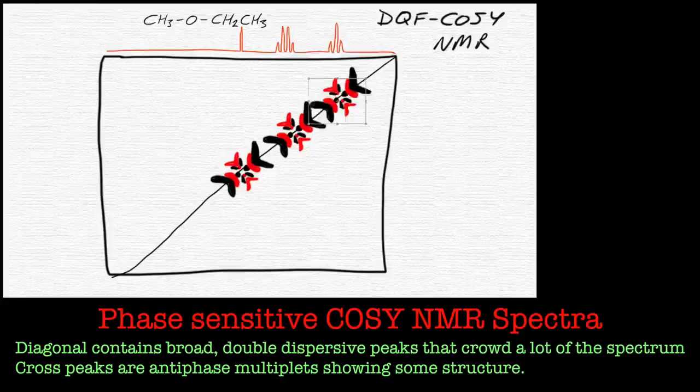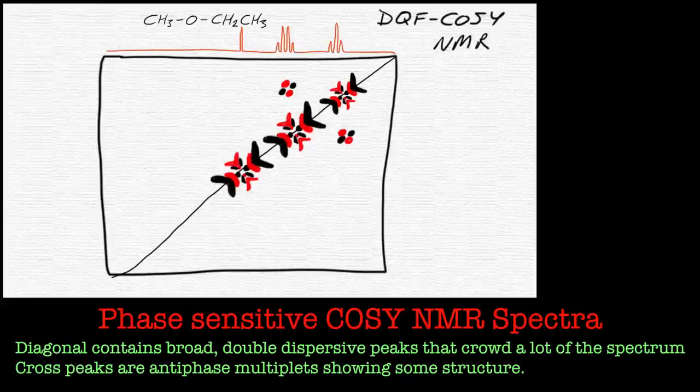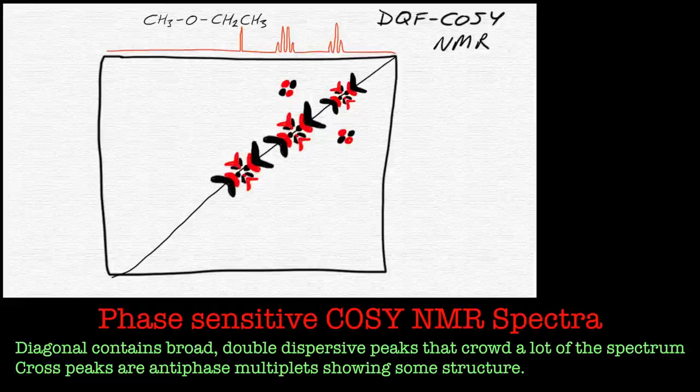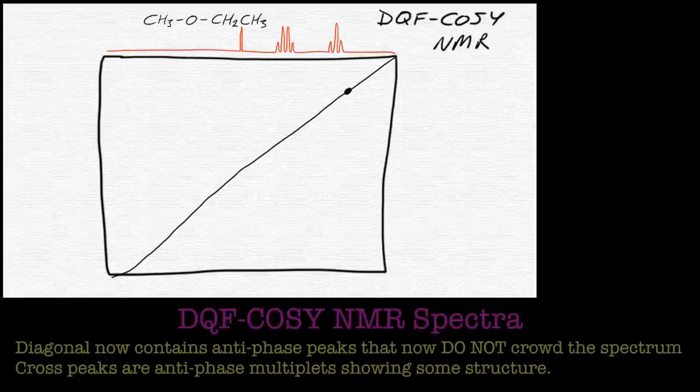If we look at the cross peaks themselves, they seem to be a lot narrower and these have this anti-phase double absorption line shape as shown here. Now what I've shown here is a rather simplified version of what you'd actually see, just to illustrate the point, showing these anti-phase cross peaks and these in-phase rather broad diagonal peaks.